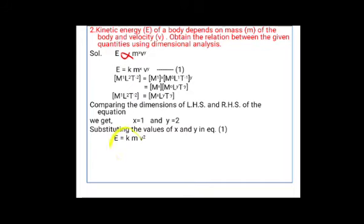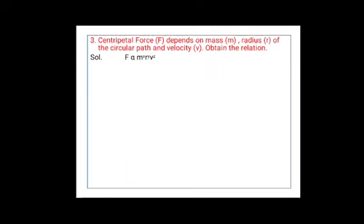Note: you don't know the value of the constant k — this is a drawback or disadvantage of the dimensional formula method. Third example: centripetal force F depends on mass m, radius r of the circular path, and velocity v. Obtain the relation. First step: F is proportional to M raised to x times R raised to y times V raised to z.